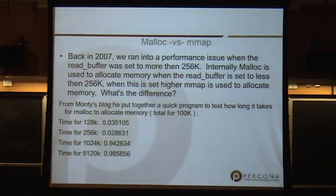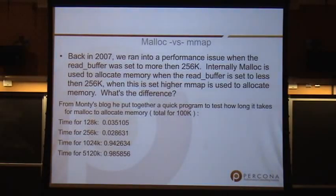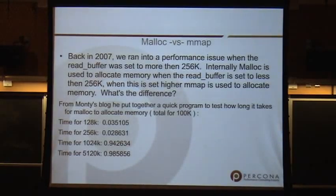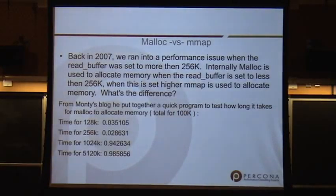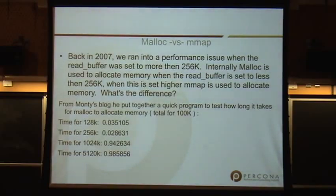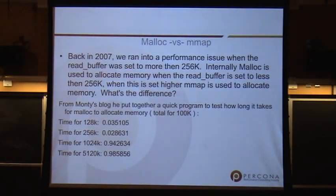Talking about per-thread buffers — back in 2007, I was with Monty Taylor at a client site, and they had set their sort buffer and read buffer to something really high, like 32 gigs. When we set those lower, CPU actually dropped substantially. Looking through the code, we found that it actually changes the memory allocation algorithm when you set it above 256k. Below 256k is a much more efficient allocation. You can see the times to allocate that memory — about 30 milliseconds versus almost a full second on that particular hardware.